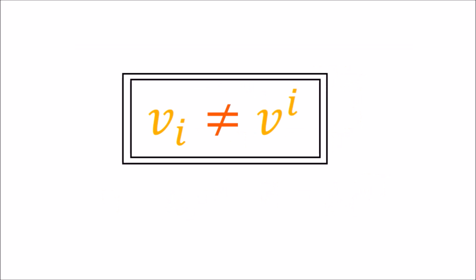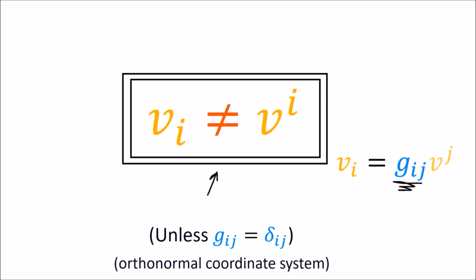I want to clarify something important: v with downstairs components and v with upstairs components are not the same thing — they are not equal. To switch between them, we have to use the metric tensor components and do a summation. The only case where this equality holds is the extremely special case where the metric tensor components are given by the Kronecker delta, which corresponds to an orthonormal coordinate system.